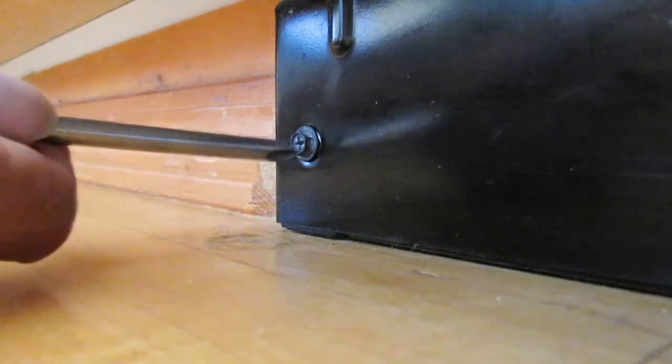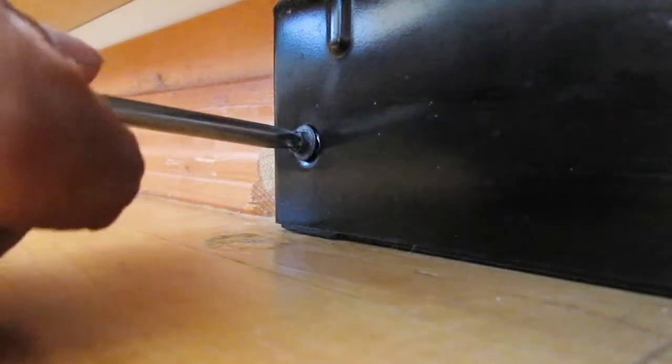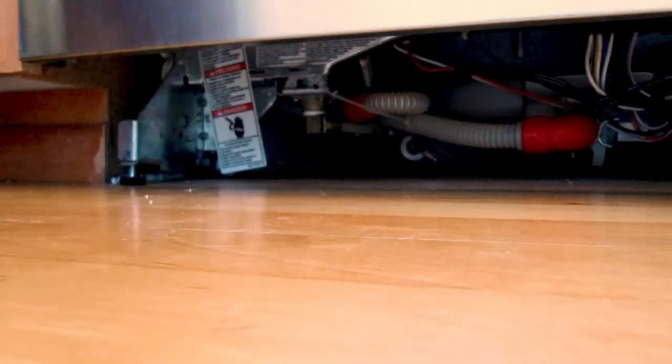To see and fix the problem, the dishwasher needs to be pulled out a bit. And don't worry, unmounting a dishwasher isn't difficult and you don't really have to slide it out very far from the cabinet.